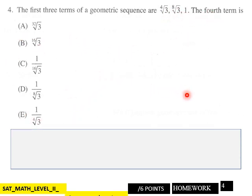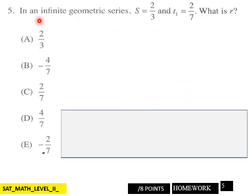Page five: in an infinite geometric series, S equals two thirds and term one equals two over seven. What is r in that situation? This is page five, eight points here, students. This must be harder.